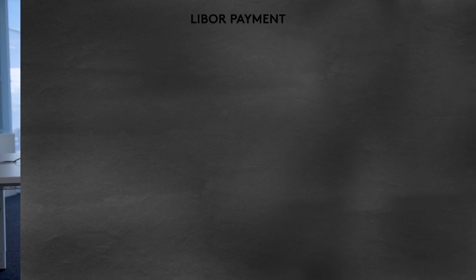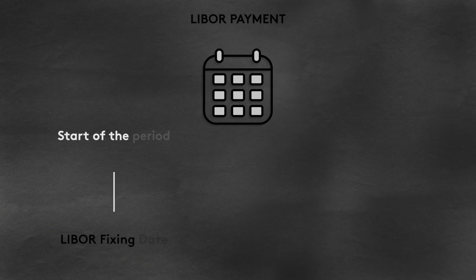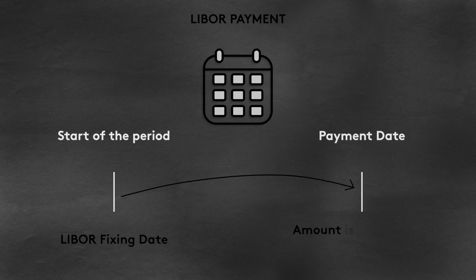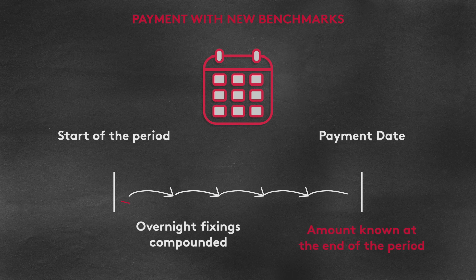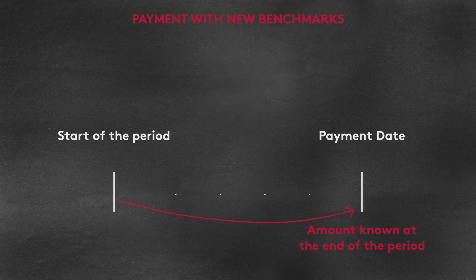The other big challenge is the operational challenge. LIBOR is what we term a forward-looking rate, so one of the benefits of it is that you know what your cash flow out is going to be — this makes it really easy for cash flow and liquidity management. The new benchmarks are backward-looking, and this causes an issue. You aren't going to know until that date what that cash flow is. That's the operational challenge, and then you have the valuation challenge and the risk management challenge.